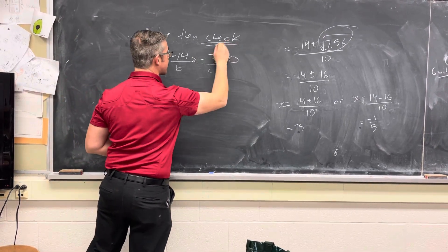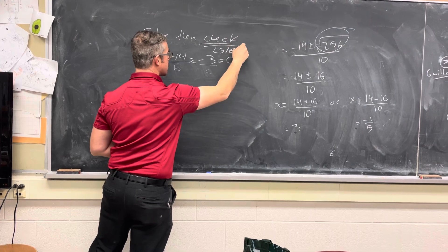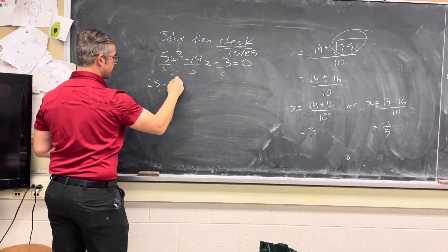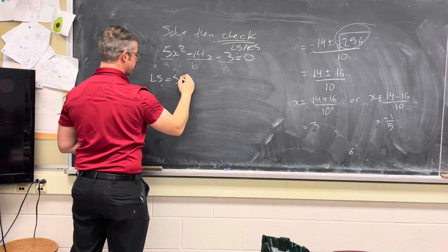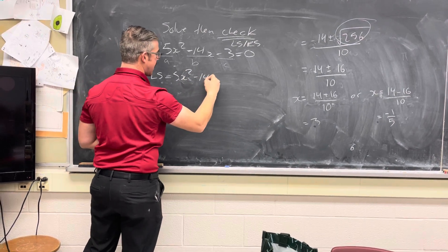Remember, when you see check, it's talking about left side, right side checks. So we'll start off by writing out the left side. That's the whole left side, which is 5 times x squared minus 14x minus 3.